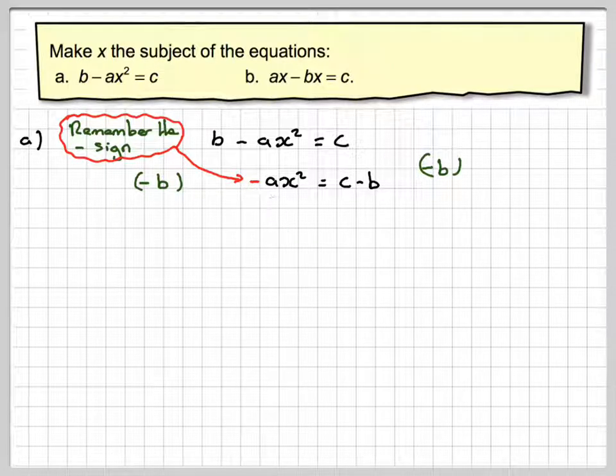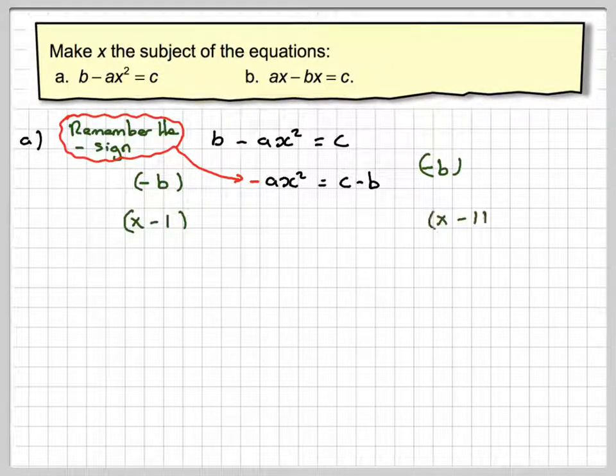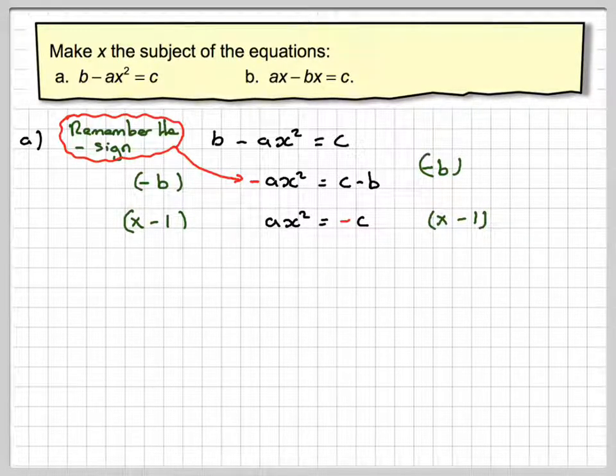This minus sign makes things a bit difficult, so multiply the whole thing by minus one. That will make this part positive, as long as we do it to everything. We get ax squared is equal to minus c, and a minus times a minus makes a plus.